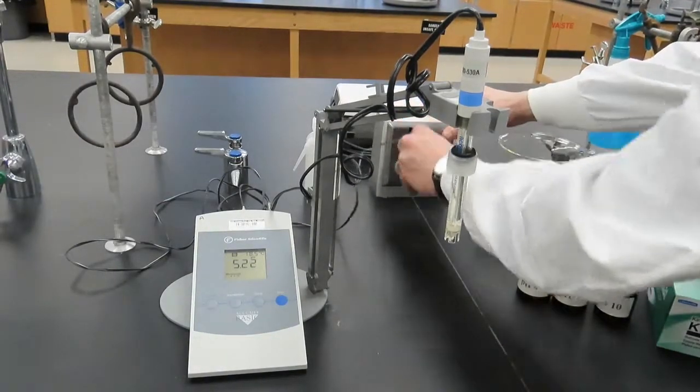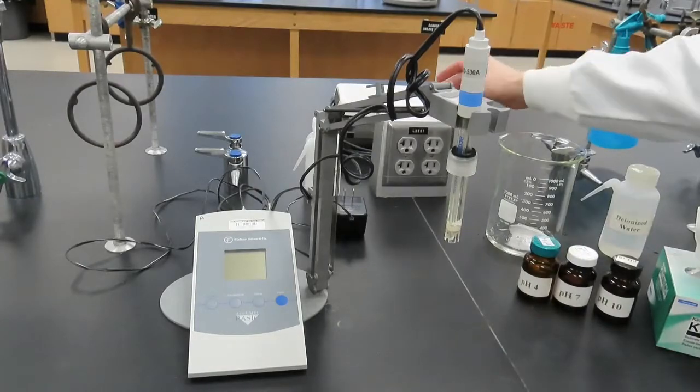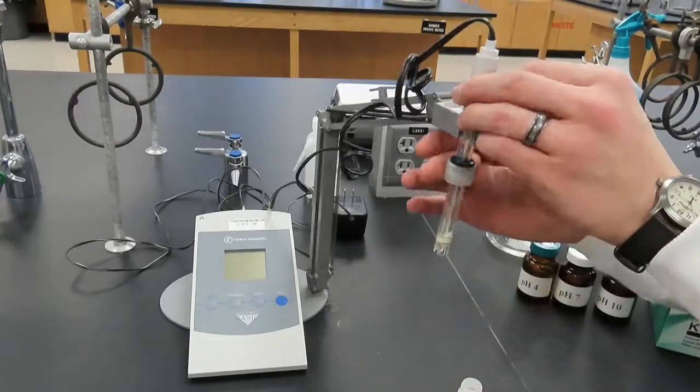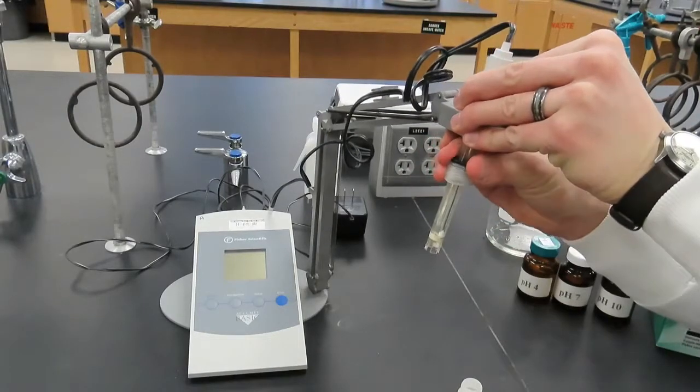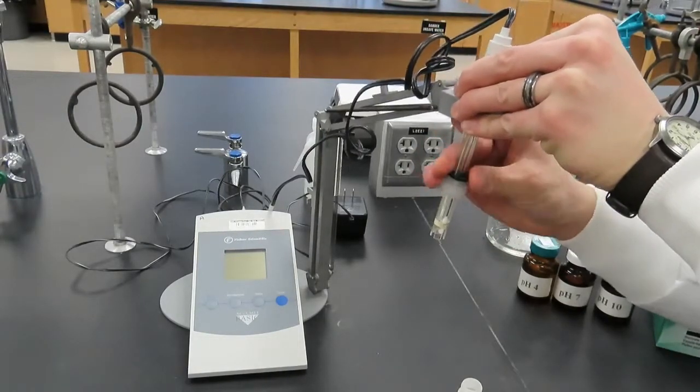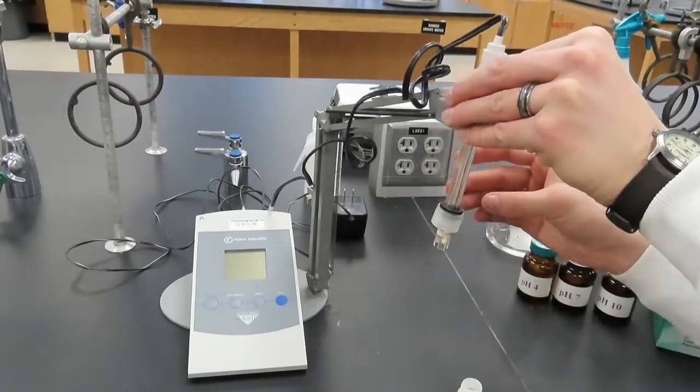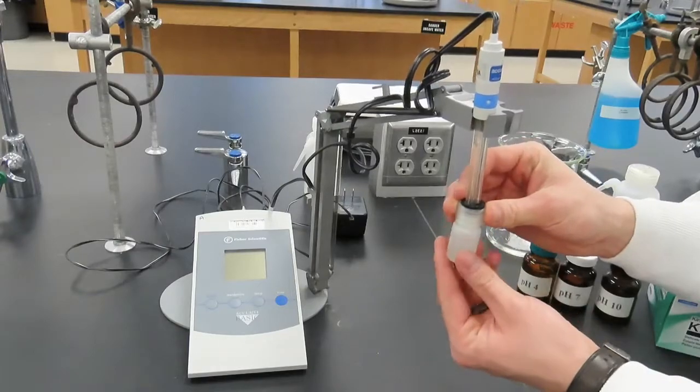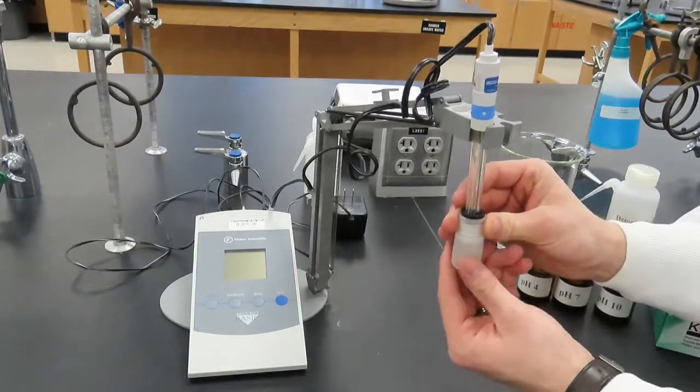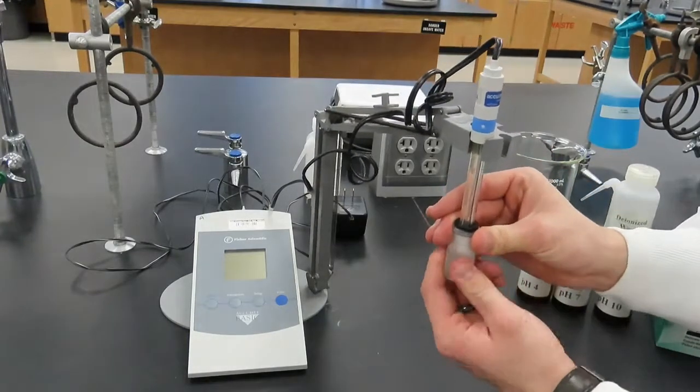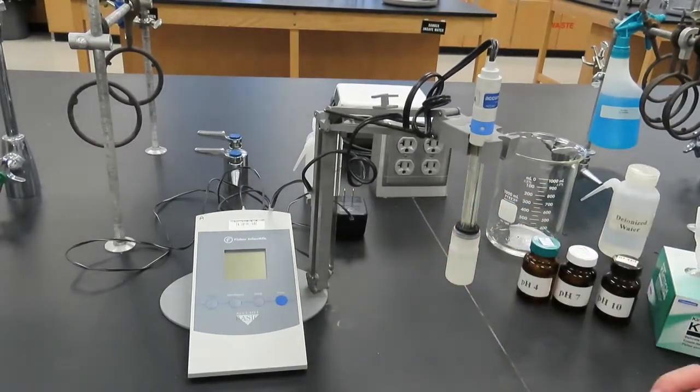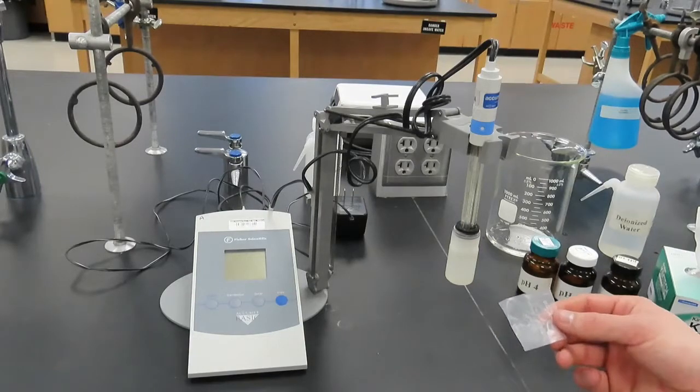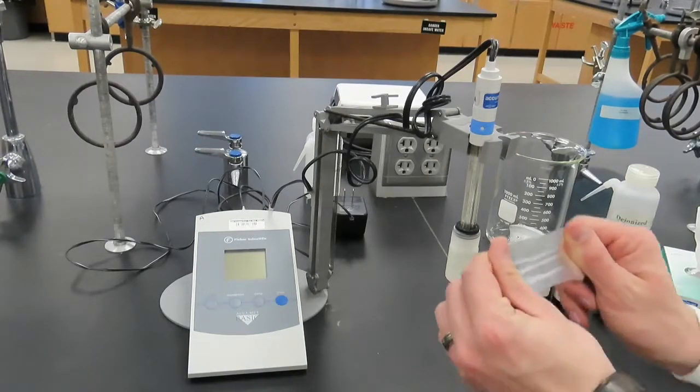When we are finished with the pH meter, we will unplug it. Re-immerse the pH electrode into its bottle of storage solution, cap the bottle, and use a piece of parafilm to wrap the top of the bottle to minimize loss of the storage solution due to evaporation or spillage.